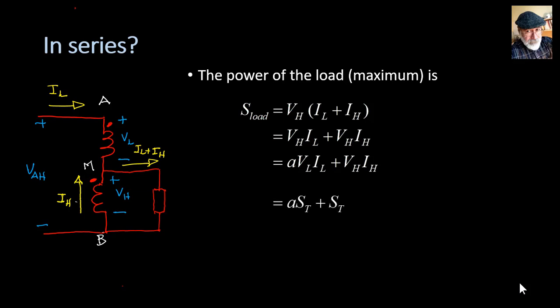We can simplify, factor out, and write it this way. A, the ratio, is VH divided by VL. In the end, we say that the maximum power that we can feed with this arrangement is greater than the rated power of the transformer itself. What is the coefficient? VH plus VL divided by VL, rated values.